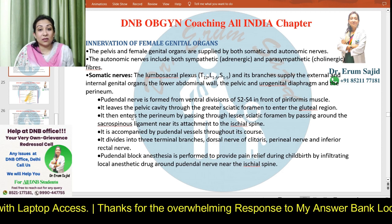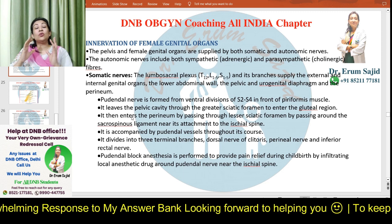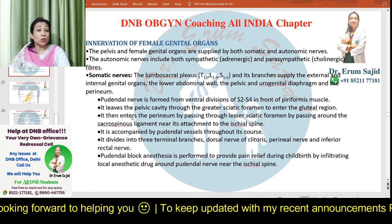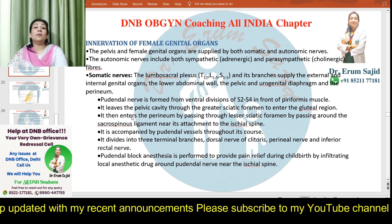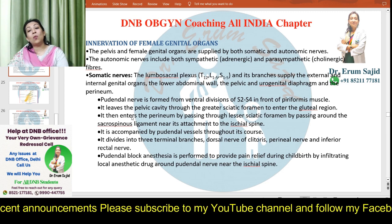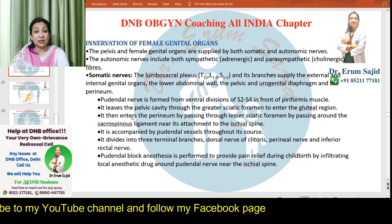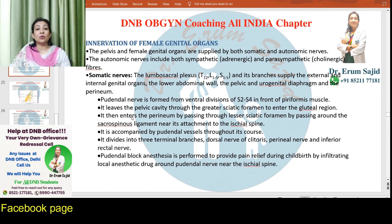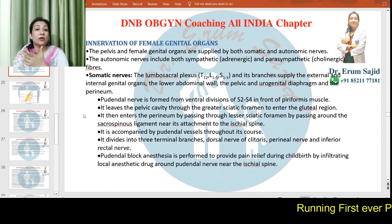As you can see on the slide, I've organized this into three crisp headings: innervation of the female genital organs — number one, somatic nerves; number two, the autonomic nervous system including sympathetic supply; and number three, parasympathetic supply. In the somatic nerves, the most important nerve is the pudendal nerve, belonging to the lumbosacral plexus, supplying external and internal genital organs, the lower abdominal wall, urogenital diaphragm, and the perineum.